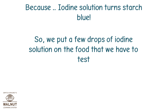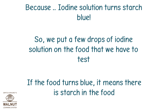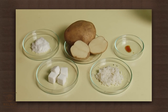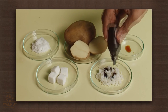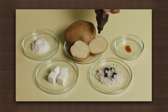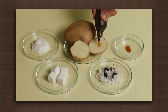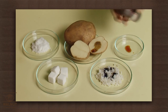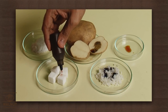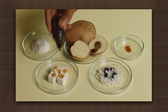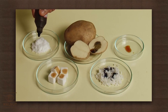So, we put a few drops of iodine solution on the food that we have to test. If the food turns blue, it means there is starch in the food. Let's see what happens when we put iodine solution on starchy food, and also what happens when we put iodine solution on food that has no starch in it.